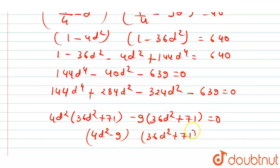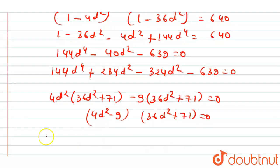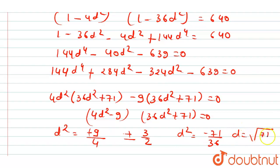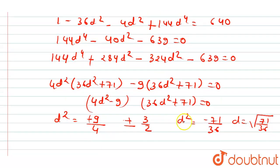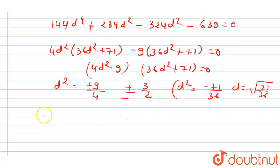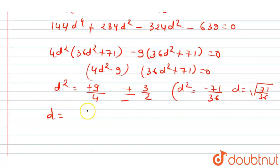Solving (4d² - 9)(36d² + 71) = 0: from the first factor, d² = 9/4, so d = ±3/2. From the second factor, d² = -71/36, which gives no real values. We ignore the imaginary solution and take d = 3/2.